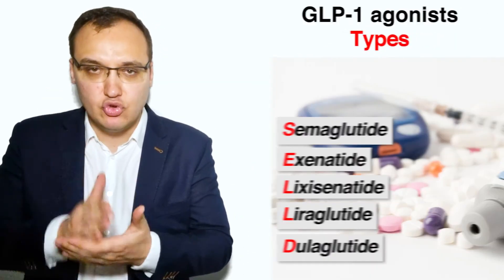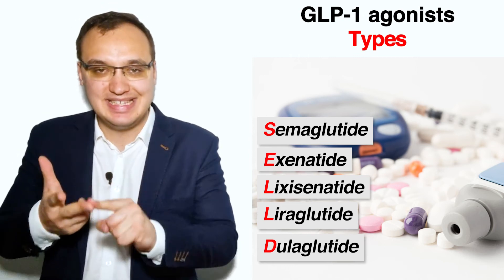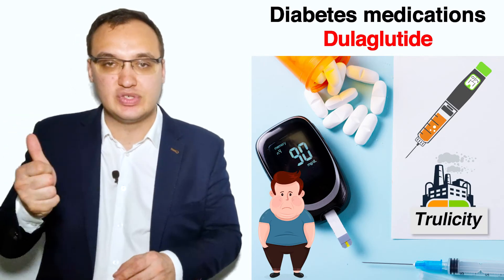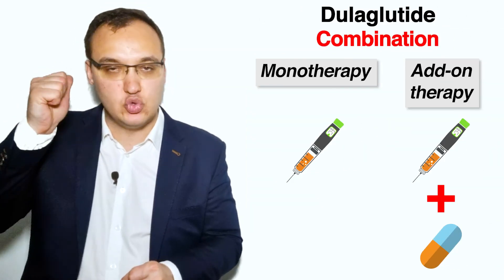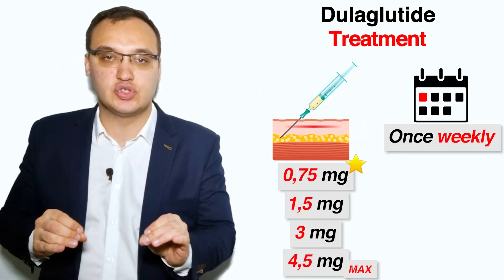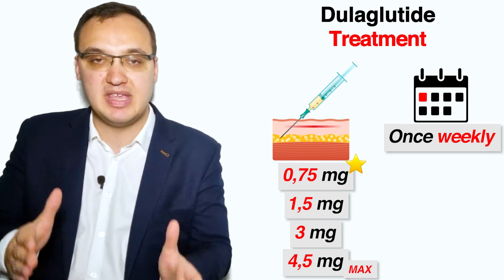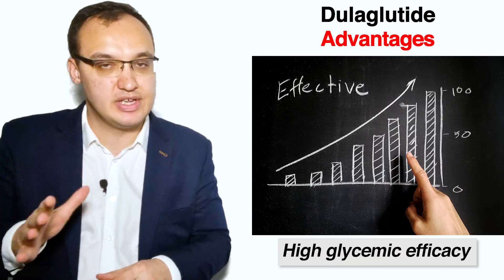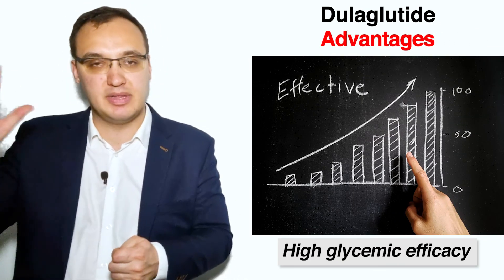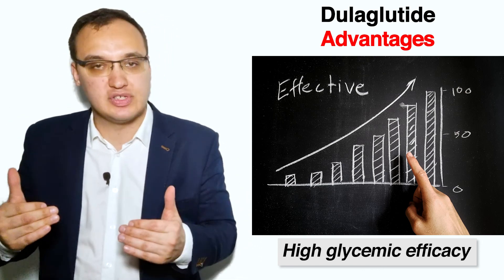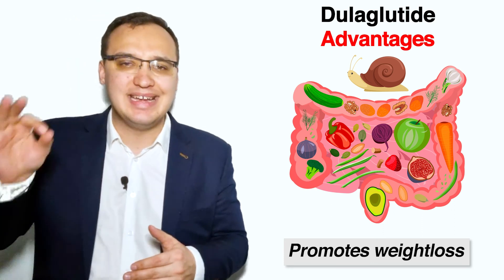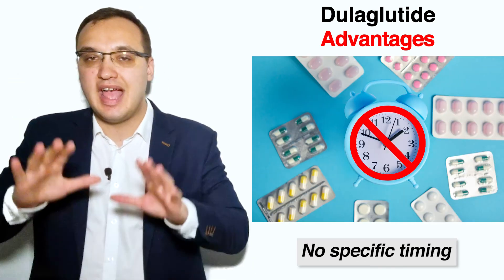Let's make a quick recap. Dulaglutide is a GLP-1 agonist, together with semaglutide, exenatide, lixisenatide, and liraglutide — remembered with the acronym SELD. The trade name of dulaglutide is Trulicity, used as medication in diabetes mellitus type 2. It can be used alone or in addition with another medicine. The recommended starting dose is 0.75 mg once weekly, which may be increased to 1.5 mg, 3 mg, or 4.5 mg depending on glycemic control. Benefits include high glycemic efficacy, weight loss through reduced appetite and slowed gastric emptying, reduced cardiovascular risk factors, and easy once-weekly administration.